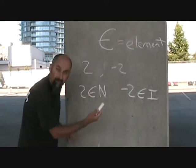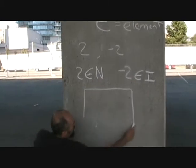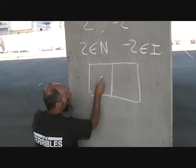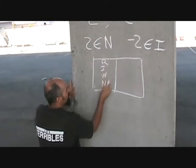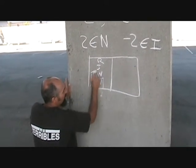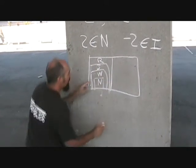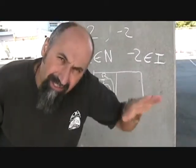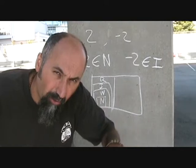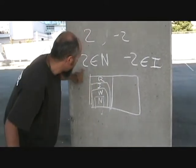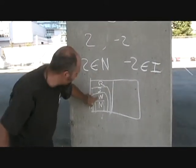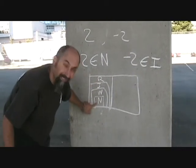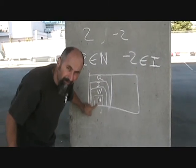Now if you remember the real number set, we have the natural numbers, the whole numbers, the integers, and the rational numbers. Each one is a subset of the previous one. So what you're going to have to do is take it down to the lowest value it can go. So 2 belongs to the whole number set, the integers, and the rational numbers, but you take it down to the lowest set, which is the natural numbers.